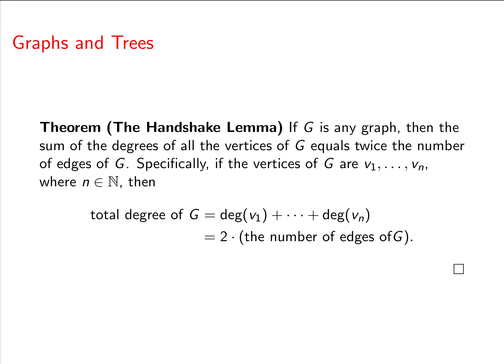All right, let's make a theorem. This is called the handshake lemma. If G is any graph, then the sum of the degrees of all the vertices of G equals twice the number of edges of G. Specifically, we can say that if the vertices of G are v1 through vn, then the total degree of G is equal to deg(v1) plus all the way down to the deg(vn). And that's going to work out to be two times the number of edges of G.